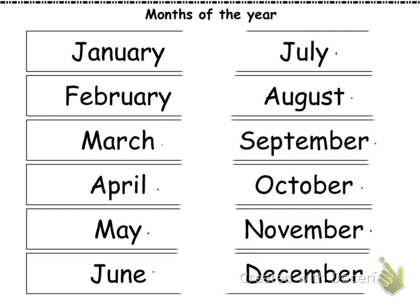We can write these months either as abbreviations or digits. Sometimes we don't have enough space to write the full name of the month, so we use an abbreviation. An abbreviation is a shorter way to write a word. So instead of January, I can write J-A-N with a period. We're going to write the abbreviation for each month using a capital letter at the beginning and a period at the end. When we see the abbreviation, we read it as the full name of the month — so I would say January, not Jan.